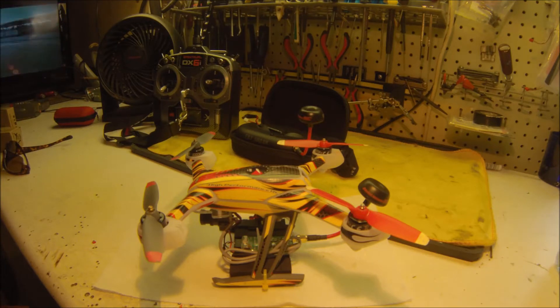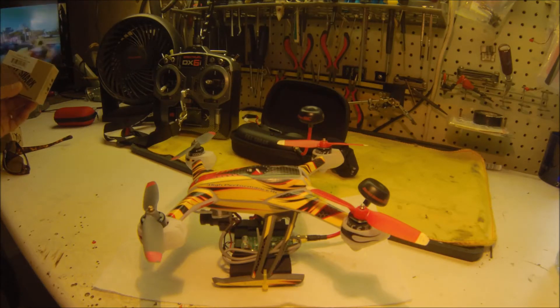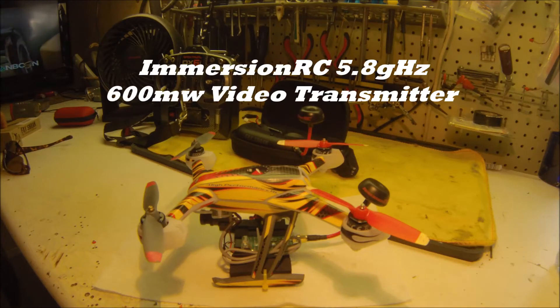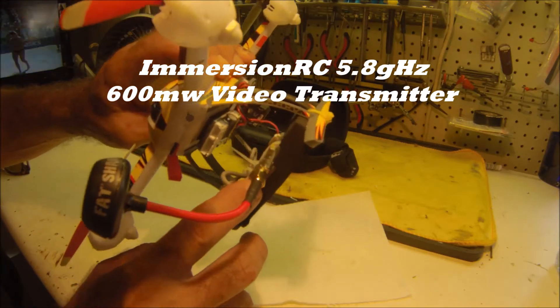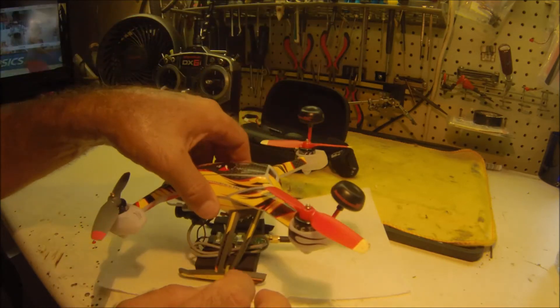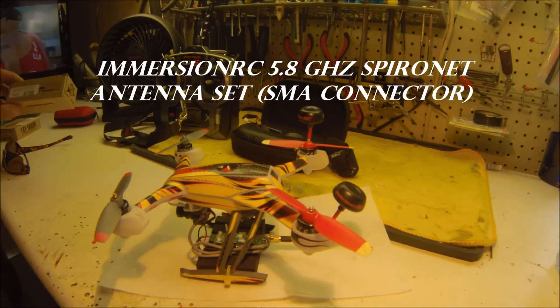I ended up going FPV. I purchased the Fatshark Attitude and put in the 600 TVL board for the transmitter, and I purchased the Immersion 5.8 Spironet antennas.